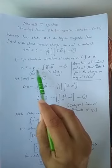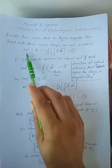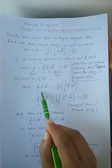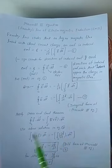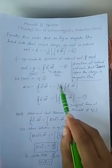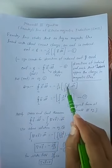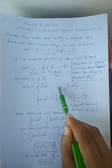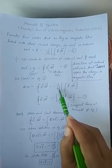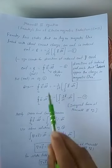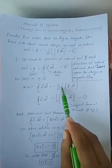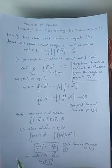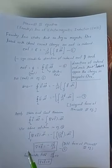Now, we put the value of EMF from equation number 6 into equation number 5. Since differentiation and integration are independent operations, we can exchange these two terms — the integral moves in and del over del T comes out. So we write this expression as the surface integral of del B over del T dot dA. This expression is called the integral form of Maxwell's third equation.